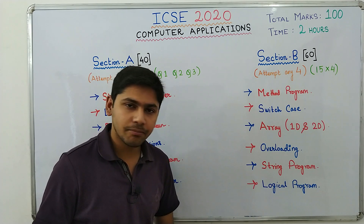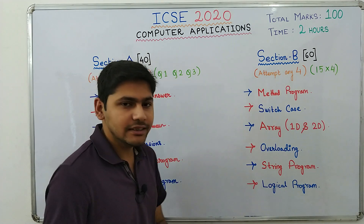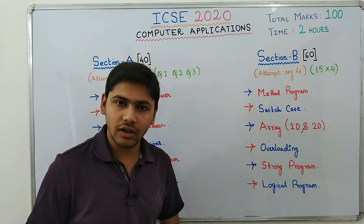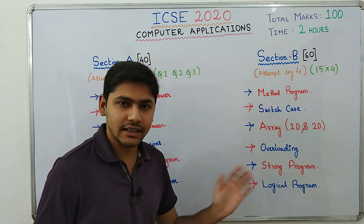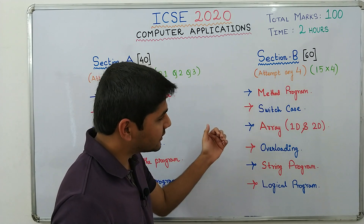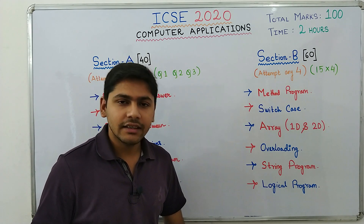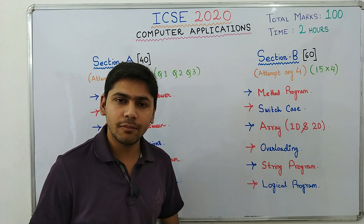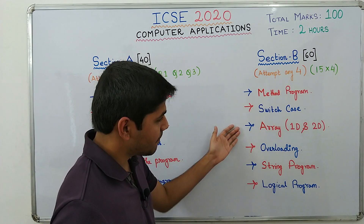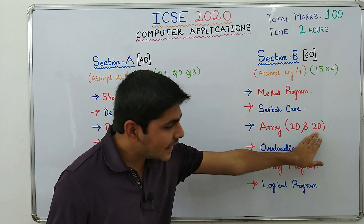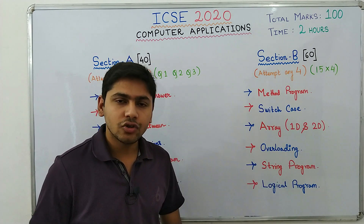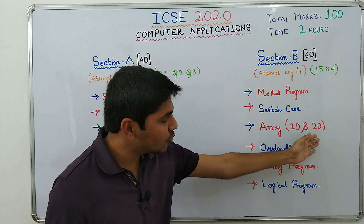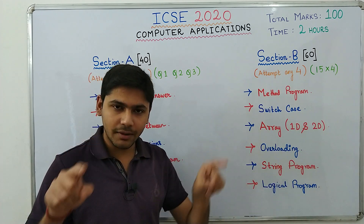The types of programs you will get include: the method program — the long method program where you define member variables and member classes. That is the big program, which is the first question in Section B. Then you have switch case — two to three small programs like patterns and series, and you will have to write a menu-driven program for that. Then you will have array. Two-dimensional array has been introduced this year, so most probably you will get two questions from array — one from one dimension and one from two dimension.